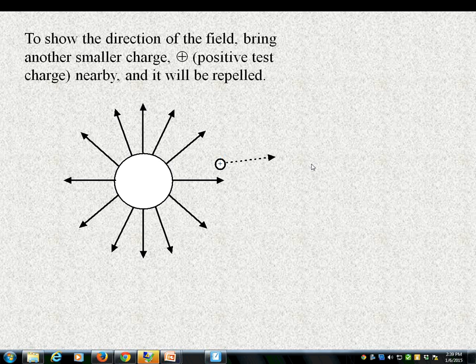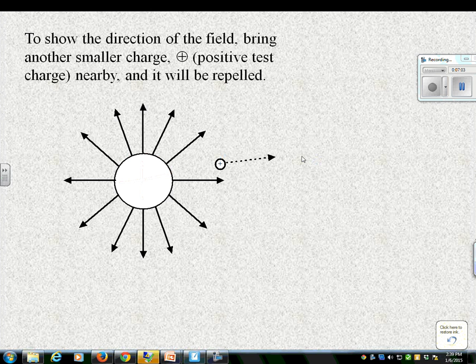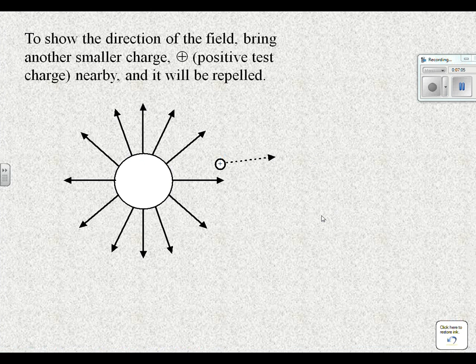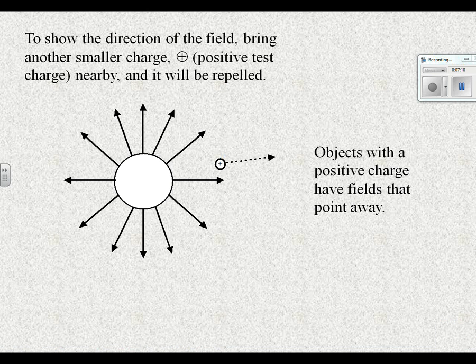So back to what we were talking about. We're talking about the direction of the field is based on a positive test charge. So in other words, this guy right here is positive, because the field points away from it. Is it always named a positive test charge? Yes. It's just like red means stop and green means go. It's convention. It's just the way it is. It's always a positive test charge. Always.